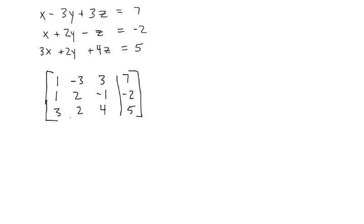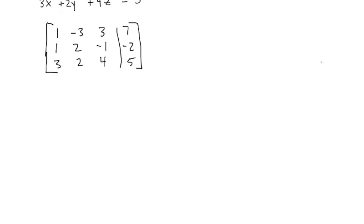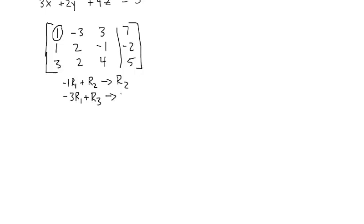Now we want to use our row operations to solve this. The idea is to first get a 1 in the upper left, and that becomes our first pivot row. We're going to use this to create zeros where this 1 and this 3 are. So we do negative 1 times R1 plus R2 and put that back in row 2, and negative 3 times row 1 plus row 3, putting that in row 3.